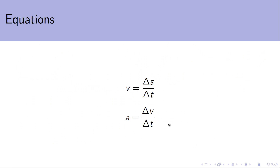And we can see we've got that first equation. For the acceleration, we've just got that acceleration is the rate of change of velocity with respect to time. So the equation is similar, but instead of displacement divided by time, we've got velocity divided by time.